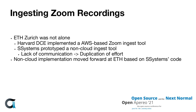Ingesting Zoom recordings was now a priority. ETH started exploring options, but there weren't really any because Zoom was still on the rise. They searched inside and outside the community and found that Harvard DCE had implemented an AWS-based Zoom ingest tool. That was fine, except Harvard's Opencast install runs entirely within AWS, so they could take shortcuts leveraging AWS's extensive tooling — Lambda for downloading and AWS queuing systems — which ETH did not want to do.